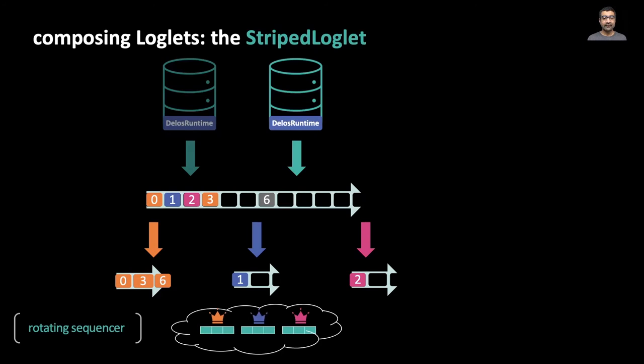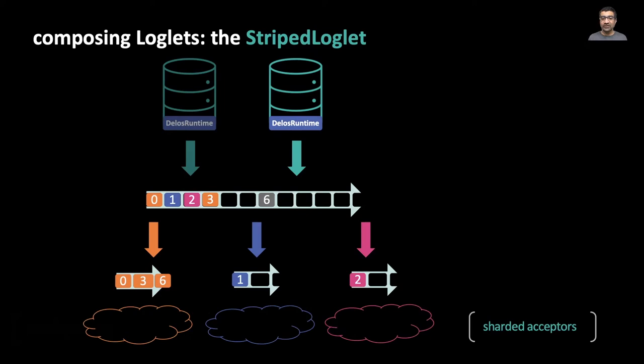The underlying stripes can be any loglet implementation. For example, there could be three native loglets with identical memberships but different sequencers. This allows us to emulate a rotating sequencer protocol where there's no single sequencing bottleneck. Or the loglets could also be completely independent with no overlap in membership. In this mode, the striped loglet allows us to scale the throughput of the log by sharding. For example, we can obtain over a million appends per second by striping across 30 different native loglets on a 90 machine cluster.